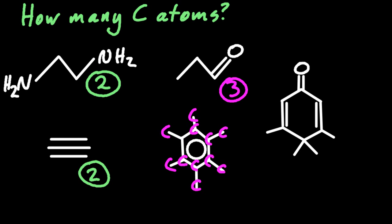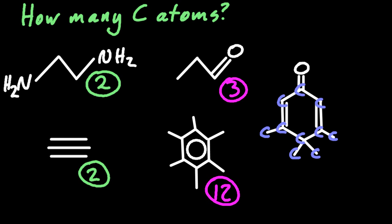Twelve for hexamethylbenzene. And that's penguinone. How many carbons there? Ten.